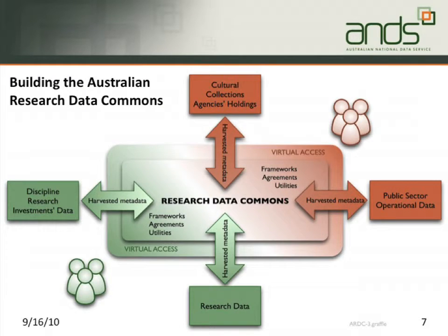Some of you may have seen this version of the diagram. Ross doesn't like this one, but I'm going to use it anyway because it enables me to talk about some things the other diagram doesn't. This is very much an institutionally focused way of viewing the world — it says these are the things that need to happen inside research-producing institutions to get this transformation.